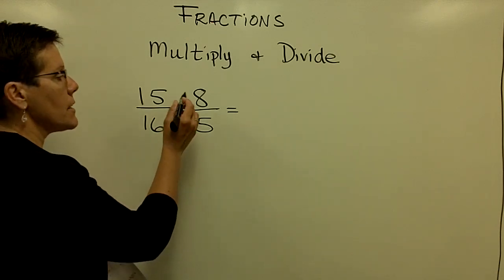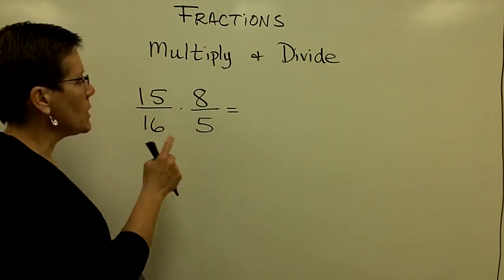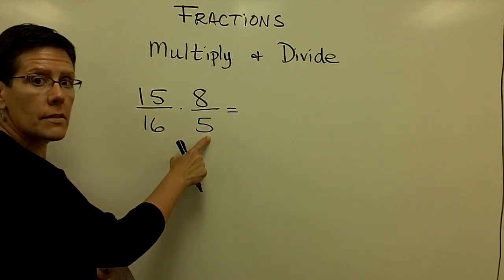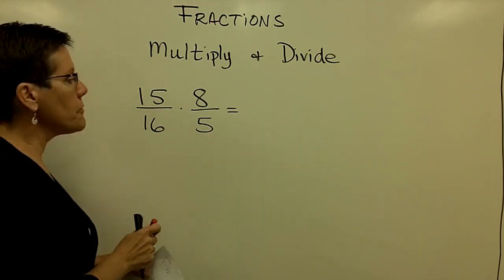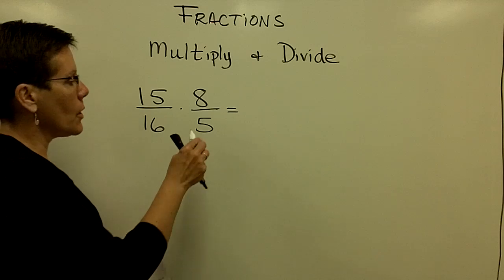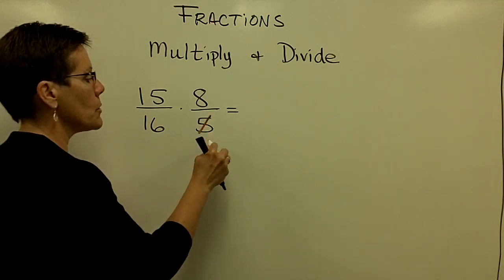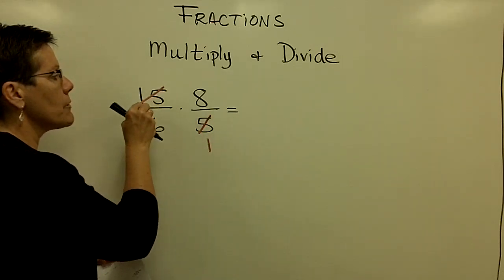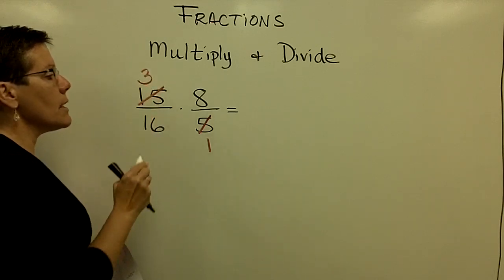Fifteenth-sixteenth times eight-fifths has common factors in the numerator here and the denominator there, a common factor of five. I can remove those factors by saying five goes into the number five one time and five goes into the number fifteen three times.